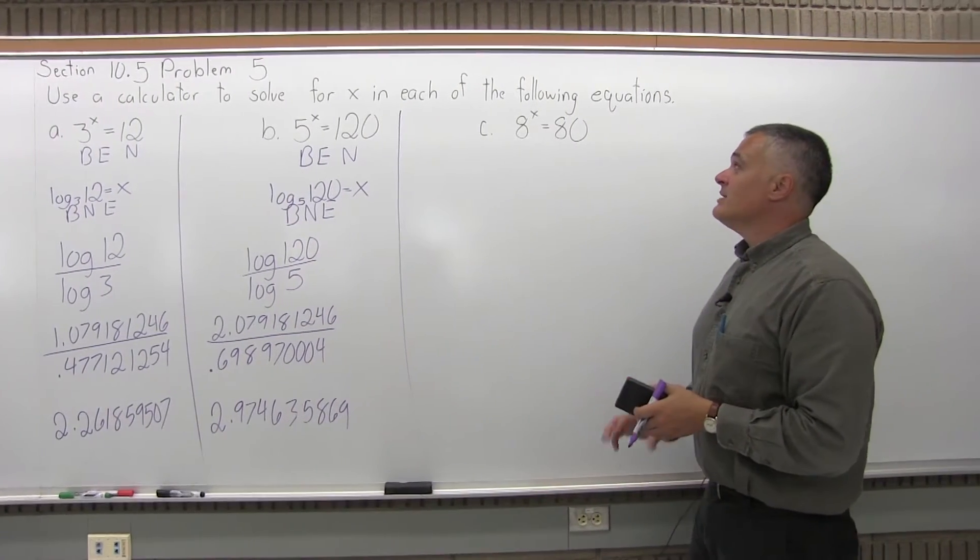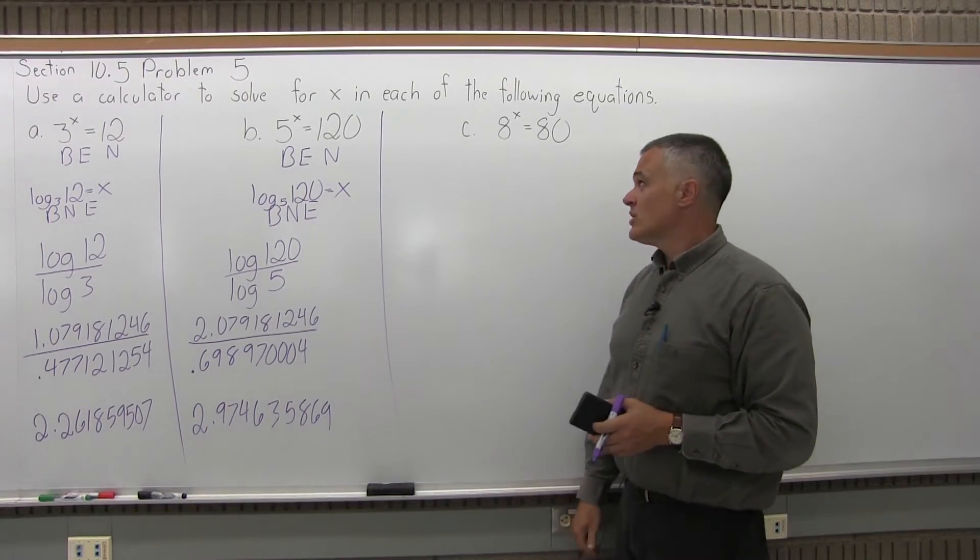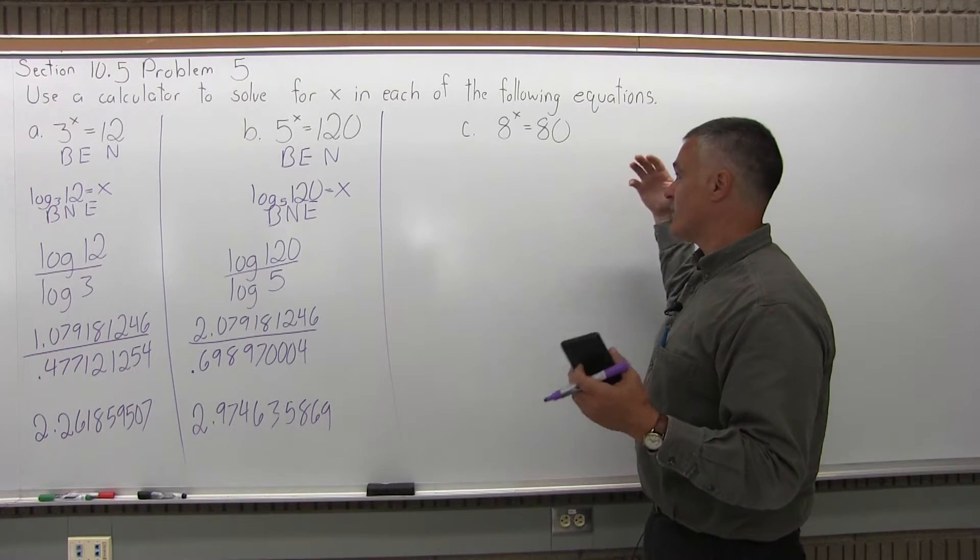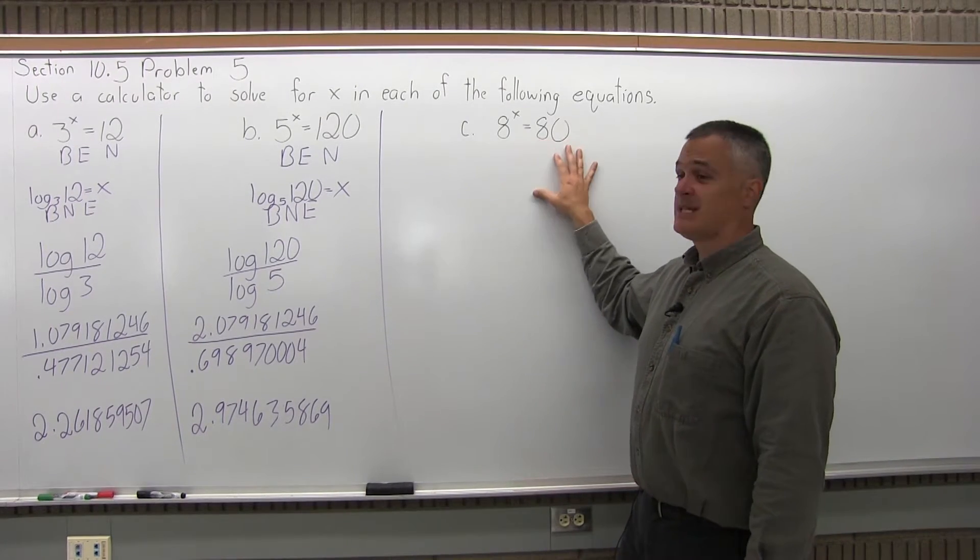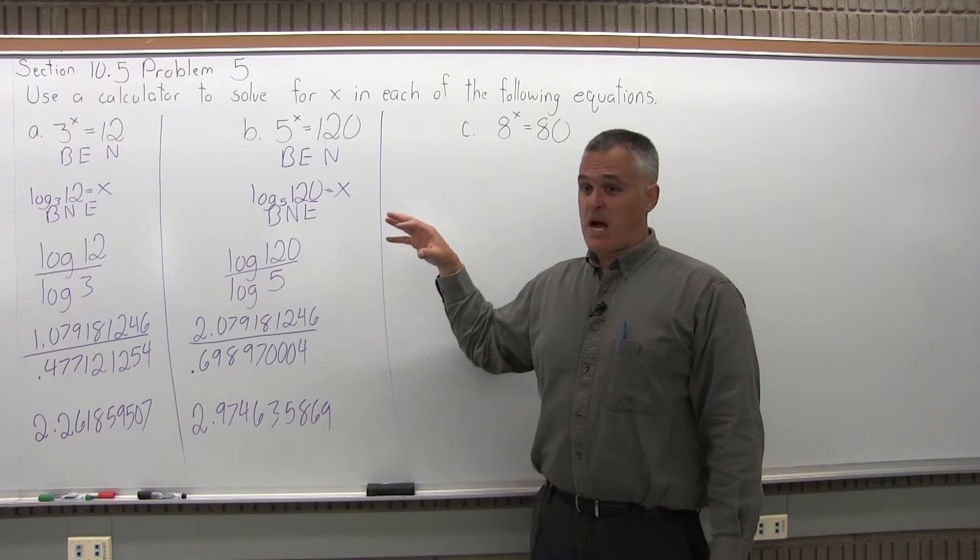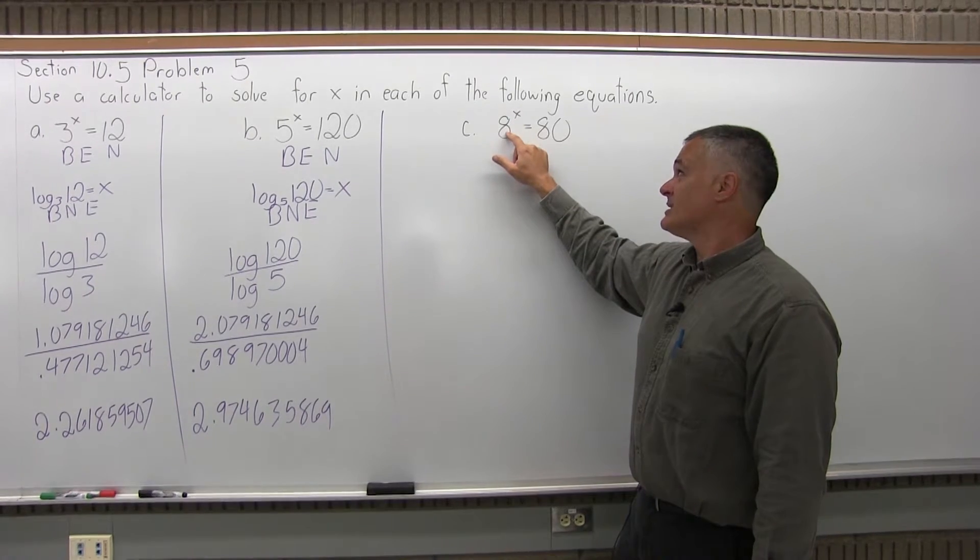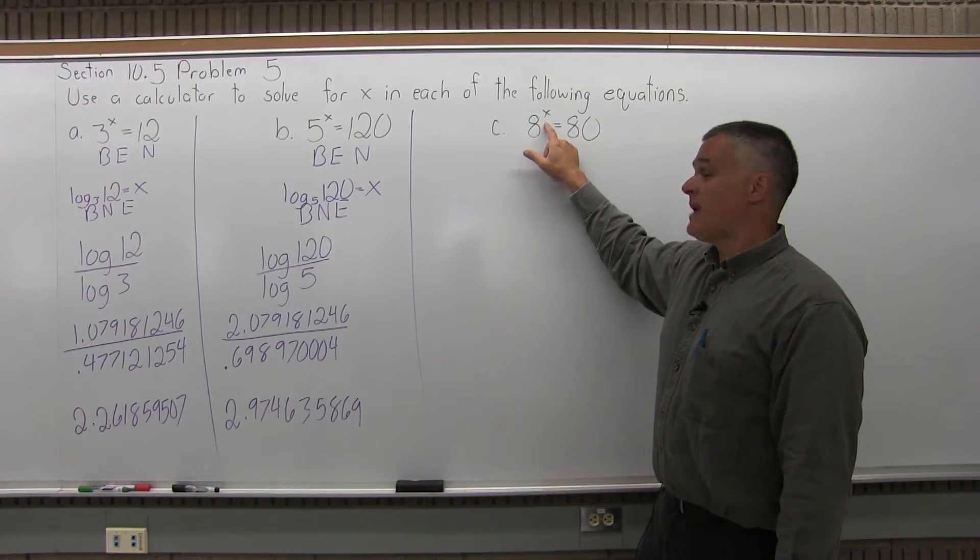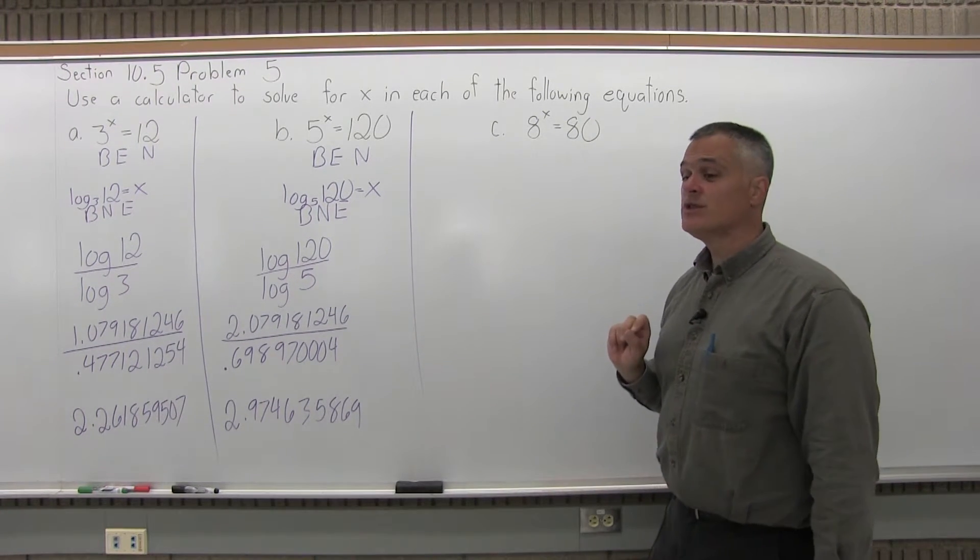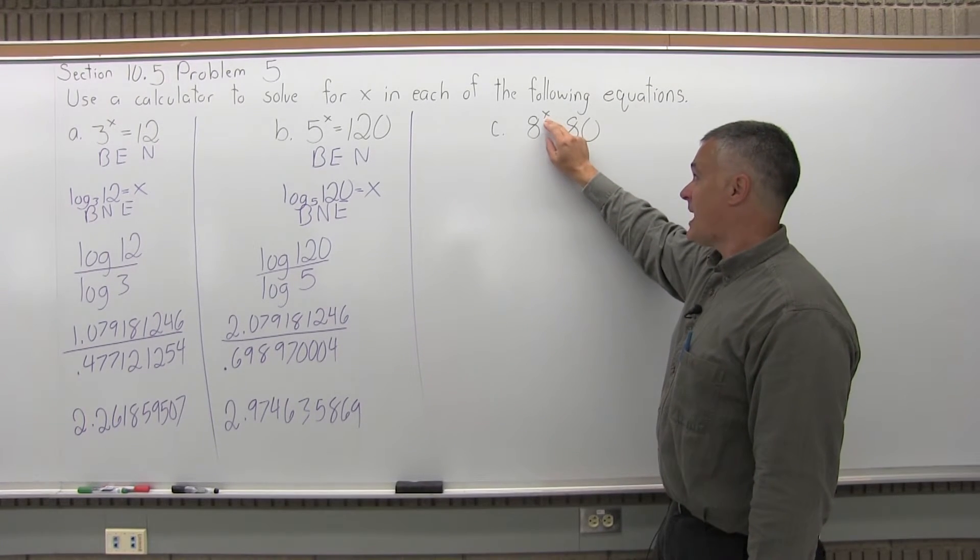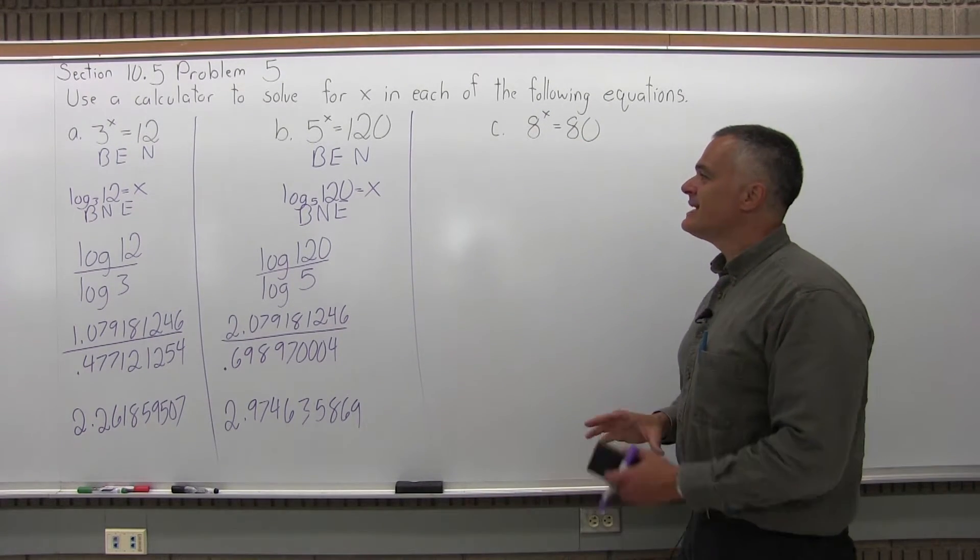And then finally, part C, solve the equation for x. 8 to the x power equals 80. So again, there's some value for x that makes this true. And at first glance, if you haven't been studying exponential equations, you'll say x is 10. Well, 8 times 10 is 80. But 8 to the 10th power is immense. It's way, way more than 80. So 8 to the first power is 8. 8 to the second power is 64. 8 to the third power, 8 times 8 times 8 is 512. So it should be between 2 and 3, closer to 2, because 8 to the second power, a value of 2 for x, would give me 64, which is fairly close to the 80. So it's going to be the same process.